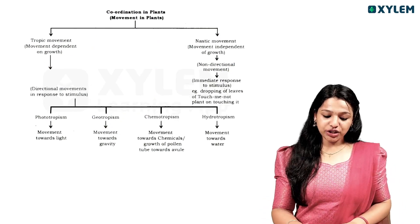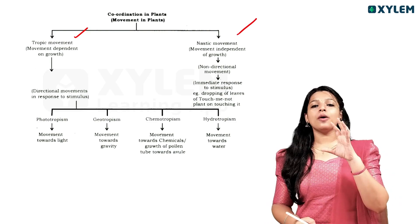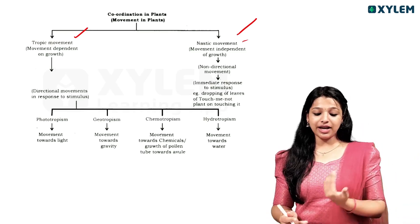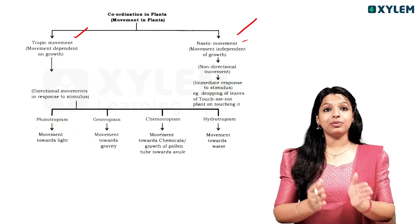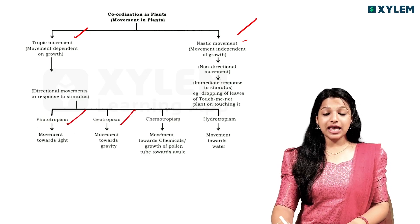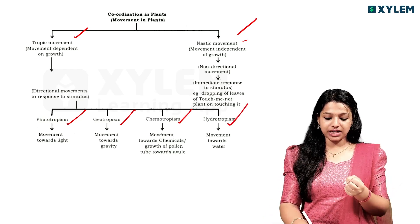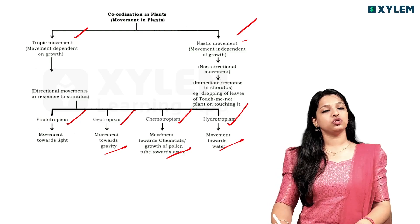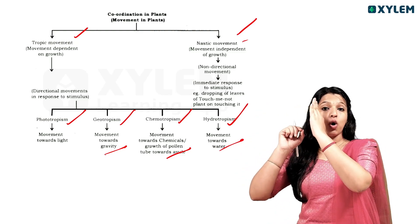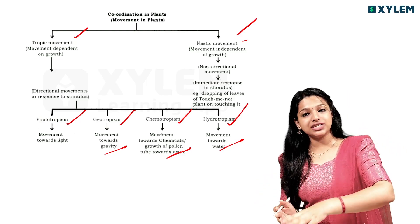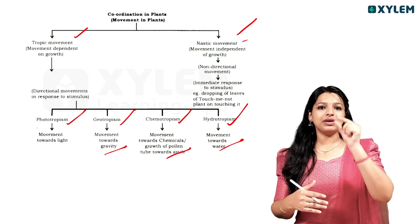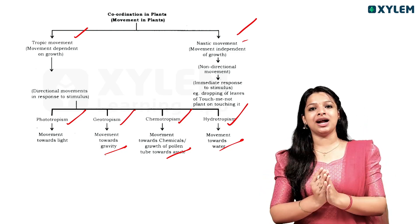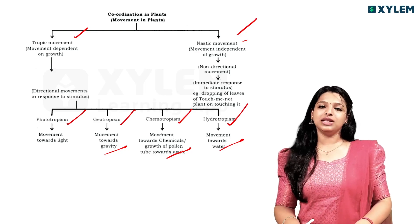Coordination in plants. Plants have two movements: tropic movement and nastic movement. Tropic movement is directional — growth in a direction. Nastic movement is independent of growth direction. Types of tropic movement: phototropism (towards light), geotropism (towards gravity), chemotropism (towards chemicals, e.g., pollen tube germination), and hydrotropism (towards water). Shoot towards light is positive phototropism and negative geotropism. Root towards gravity is positive geotropism and negative phototropism. Pollen tube is positive chemotropism. Roots towards water is positive hydrotropism.